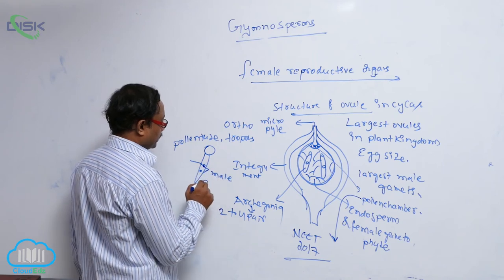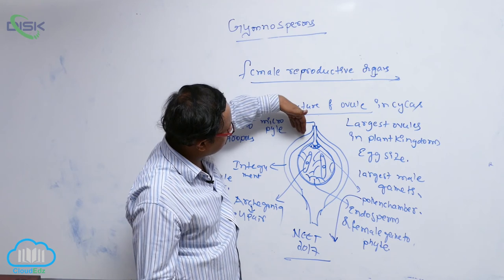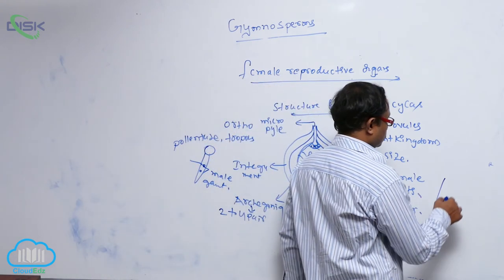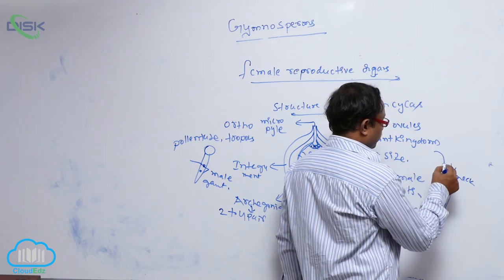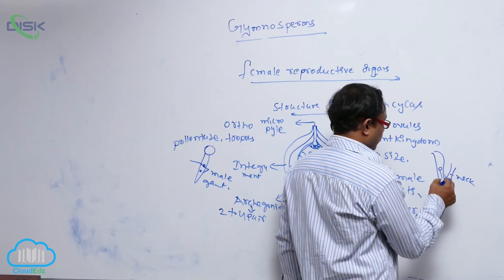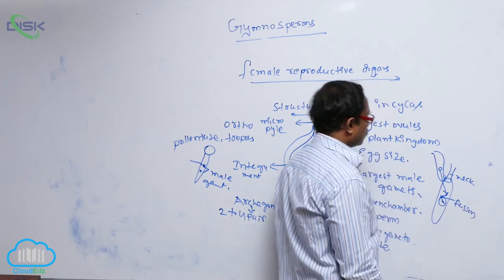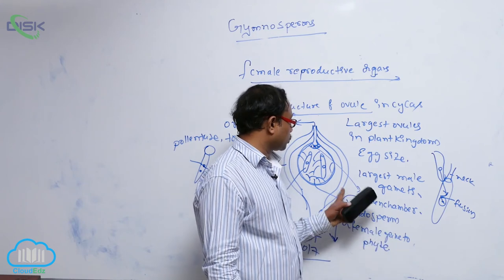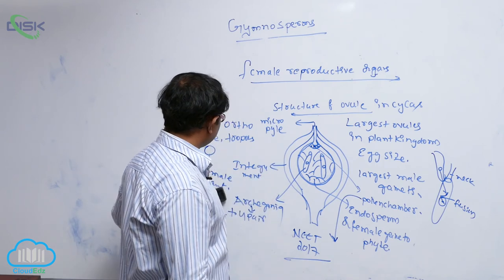The pollen tube carries the male gametes. When the pollen tube reaches up to the mouth of the archegonium — this process is known as pollination — the male gametes are released and fuse with the egg cell to form a zygote. After that, the zygote is converted into an embryo. The endosperm provides nourishment for the development of the embryo. That is the structure of the ovule and reproduction in gymnosperm plants.